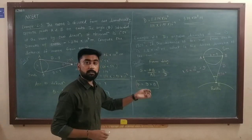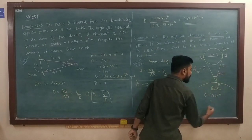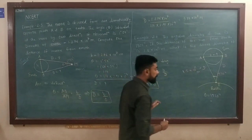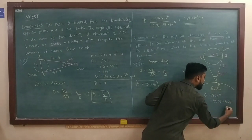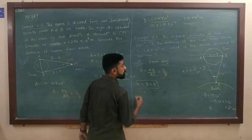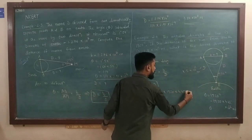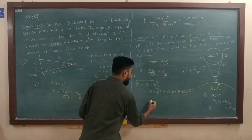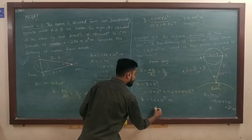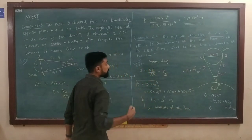Converting theta: 1 second equals 4.85 into 10 to the minus 6 radian, so 1920 seconds equals 1920 into 4.85 into 10 to the minus 6 radian. Now b equals D into theta equals 1.5 into 10 to the 11 into 1920 into 4.85 into 10 to the minus 6. The final answer is 1.4 into 10 to the 9 meters, which is the diameter of the sun.